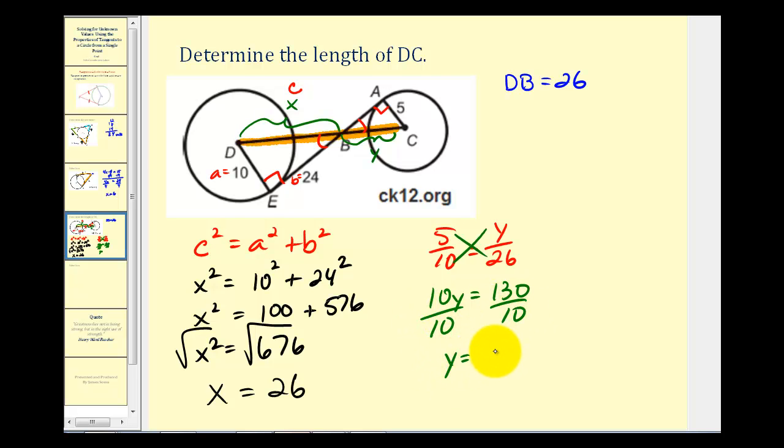We have Y equals thirteen, which tells us the length of segment BC is equal to thirteen units. Now we have all the information we need. The length of segment DC is going to be equal to the sum of the length of DB plus the length of BC. So twenty-six plus thirteen is going to give us thirty-nine units for the length that we're trying to determine here in orange.